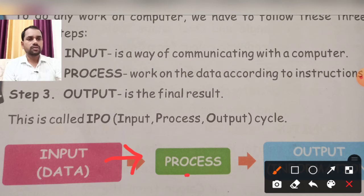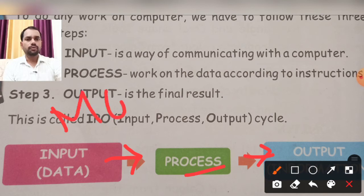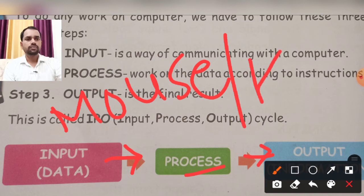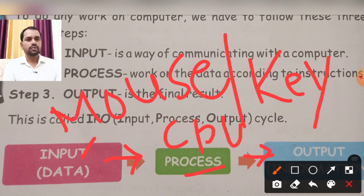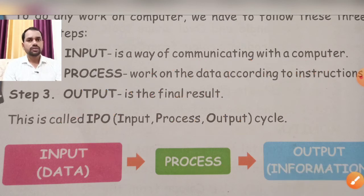Input is your mouse or keyboard through which you give input. Small buttons on the keyboard are known as keys. Processing happens with the help of CPU, which is the brain of the computer. Output can be printer or monitor. If we want to see on screen, output will be on monitor. But if we need print on paper, we use printer to get hard copy as output.